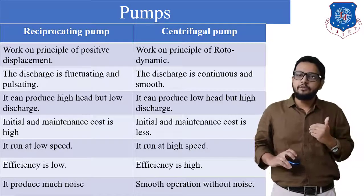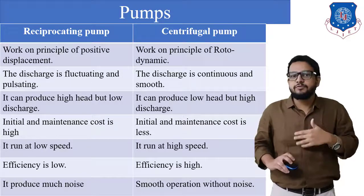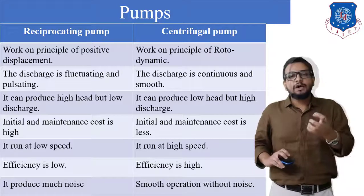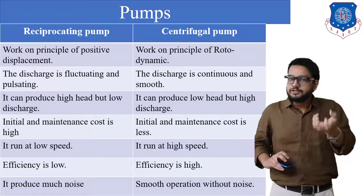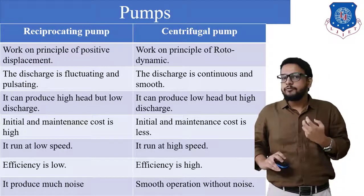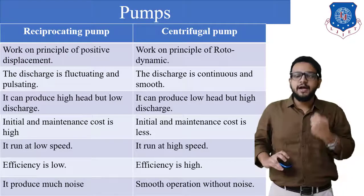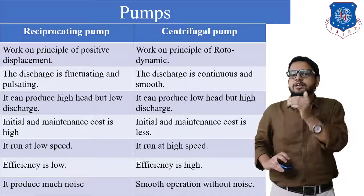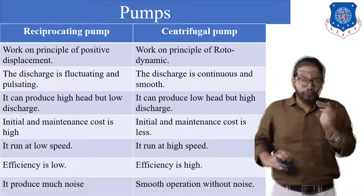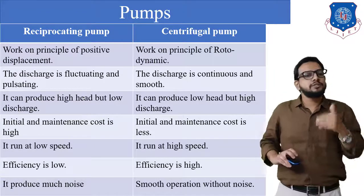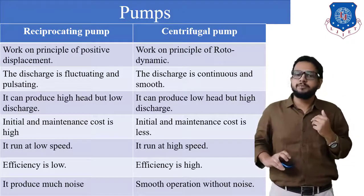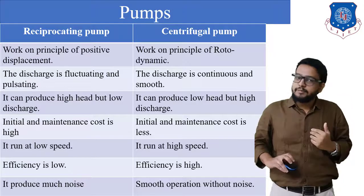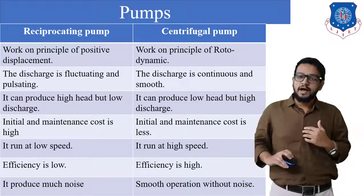Initial and maintenance cost is high for a reciprocating pump because it has many parts — piston, piston rod, connecting rod, crank — leading to higher investment and maintenance. For a centrifugal pump, initial and maintenance cost is less as it has limited parts: impeller blades, pump shaft, and casing. A reciprocating pump runs at lower speed, whereas a centrifugal pump runs at a high speed of nearly 30,000 RPM.